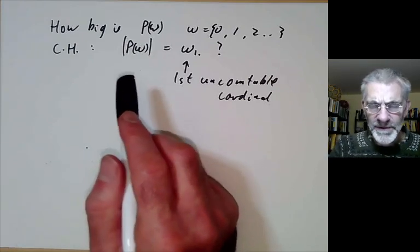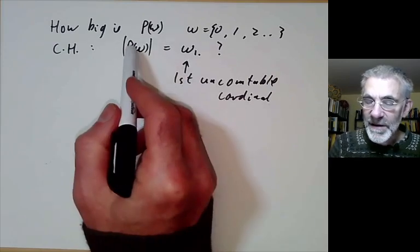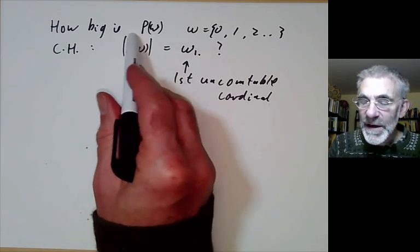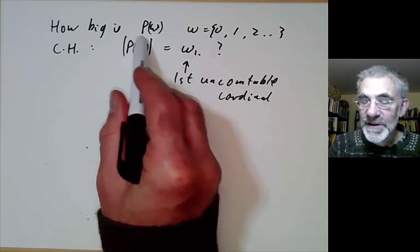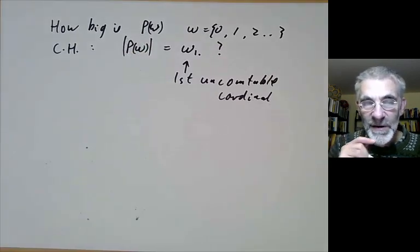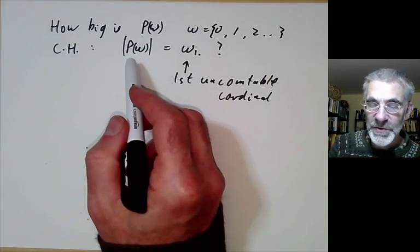The problem is that his proof involves something called the axiom of choice which is a rather controversial axiom. In particular no one has ever really managed to write down an explicit well ordering on this set here even though we have a sort of existence proof if you believe the axiom of choice.